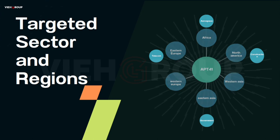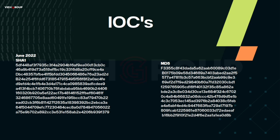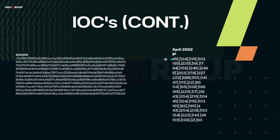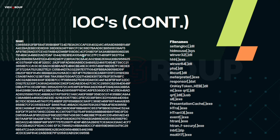The indicators of compromise (IOCs) to keep in mind include: SHA1 tokens, MD5 hashes, SHA256 codes, IP addresses associated with the hacking group found during attacks, SHA1 IOC files, and file names commonly found at the start of specific attacks.